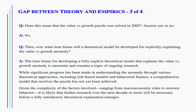Does this mean that the value versus growth puzzle was solved in 2005? No. Over what time frame will a theoretical model be developed for explicitly explaining the value versus growth anomaly? The time frame for developing a fully explicit theoretical model is uncertain and remains a topic of ongoing research. While significant progress has been made through various theoretical approaches, including risk-based models and behavioral finance, a comprehensive model that resolves the puzzle has not yet been achieved. Given the complexity of the factors involved, ranging from macroeconomic risks to investor behavior, it is likely that further research over the next decade or more will be necessary before a fully satisfactory theoretical explanation emerges.